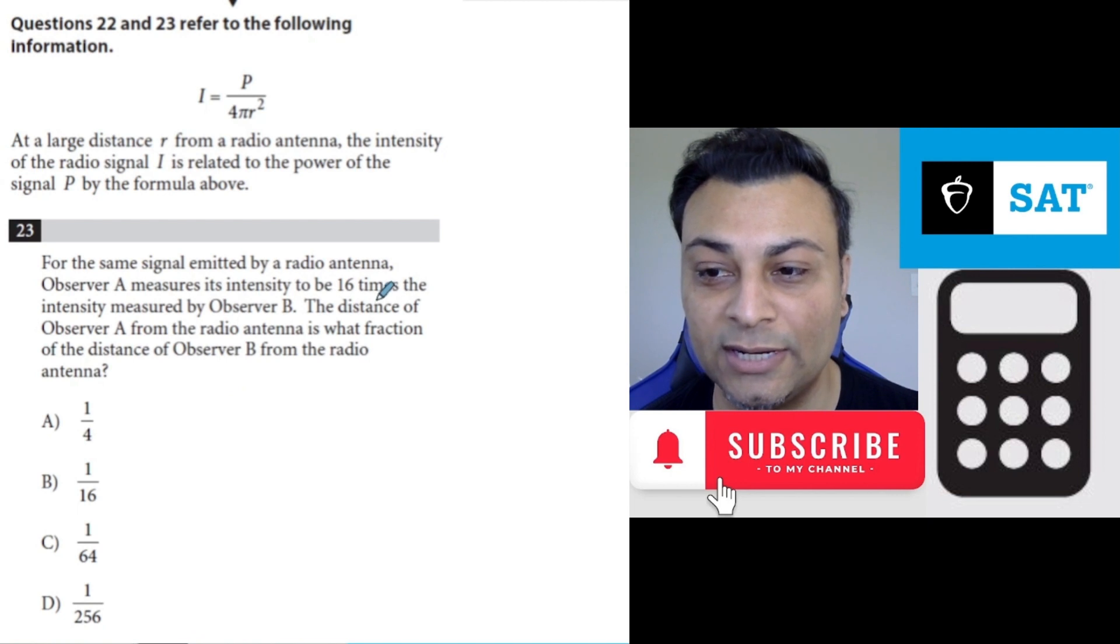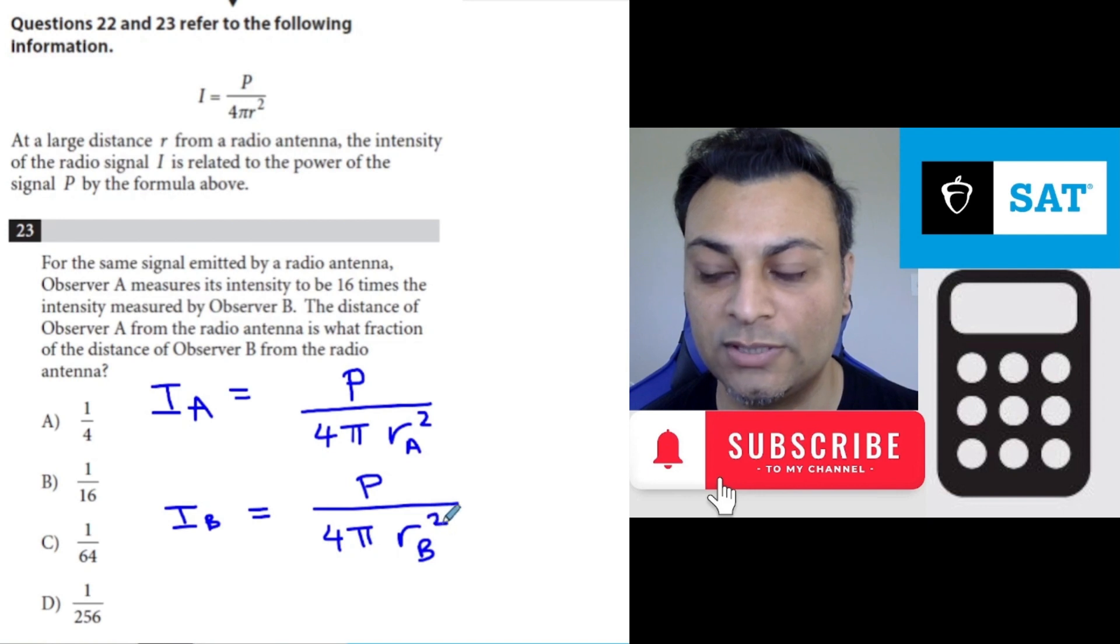So 16 times the intensity. That means Observer A has a certain intensity, let's call it I sub A, and it comes from the same signal, so same power, over 4 pi, times that distance squared. Observer B would have the same form: I sub B equals P over 4 pi radius B squared, distance B squared.